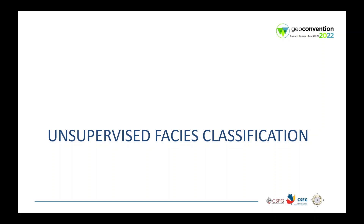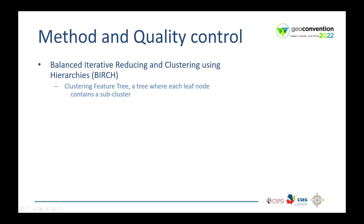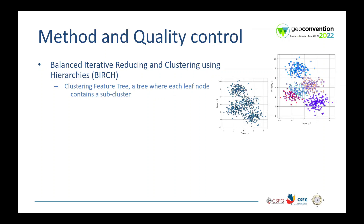Now let's start with the unsupervised facies classification. For the unsupervised facies classification, the true facies log is used only to check the results — it is not part of the process. To perform the classification, we use the Balanced Iterative Reducing and Clustering Using Hierarchics, also known as BIRCH. It is a clustering feature tree where each leaf node contains a subcluster. I selected this clustering technique after tests with other clustering techniques available in Python and achieved the best result.